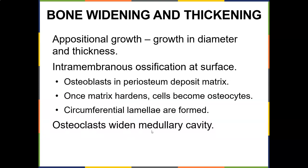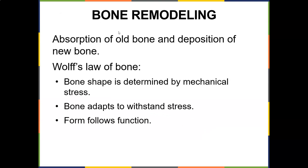Osteoclasts widen the medullary cavity, so bones become thicker. Bone remodeling involves absorption of old bone and deposition of new bone, governed by Wolff's Law: bone shape is determined by mechanical stress. Someone who is 400–500 pounds will place extreme stress on bones, causing them to bow out — that's Wolff's Law in action; bone adapts to withstand stress and form follows function.